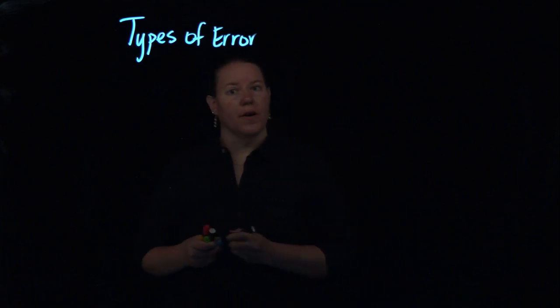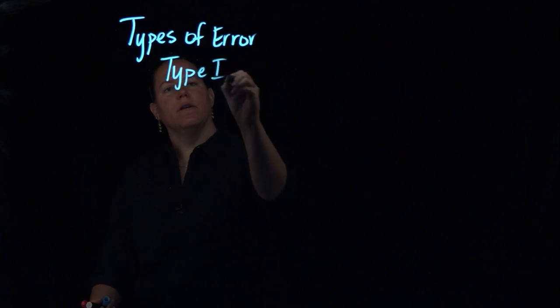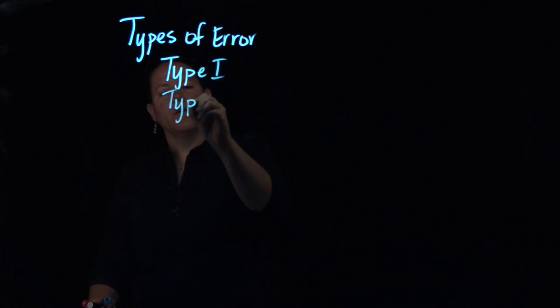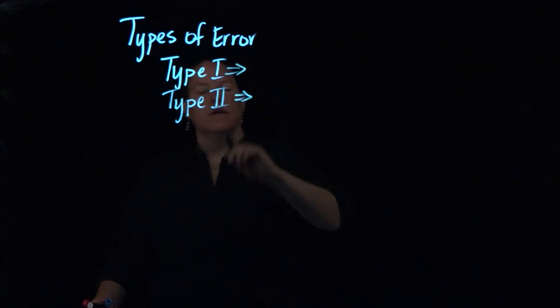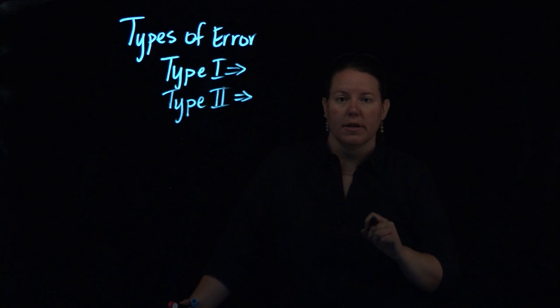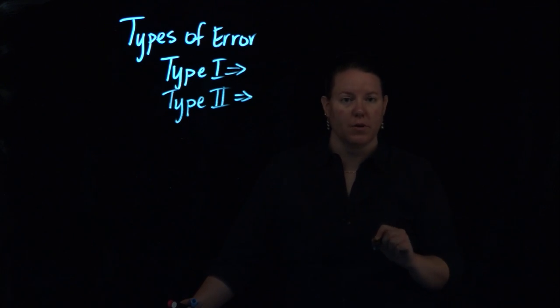So what kinds of error are there? There's Type 1 error and there's Type 2 error. So what is Type 1 error? Type 1 error is when you reject the null hypothesis when it was true.